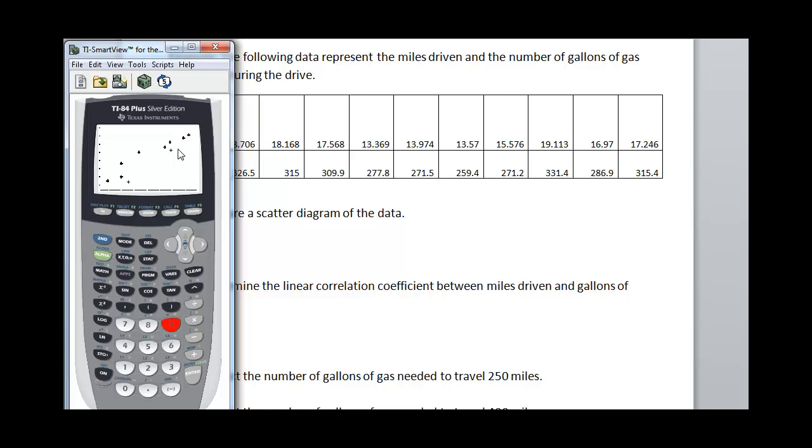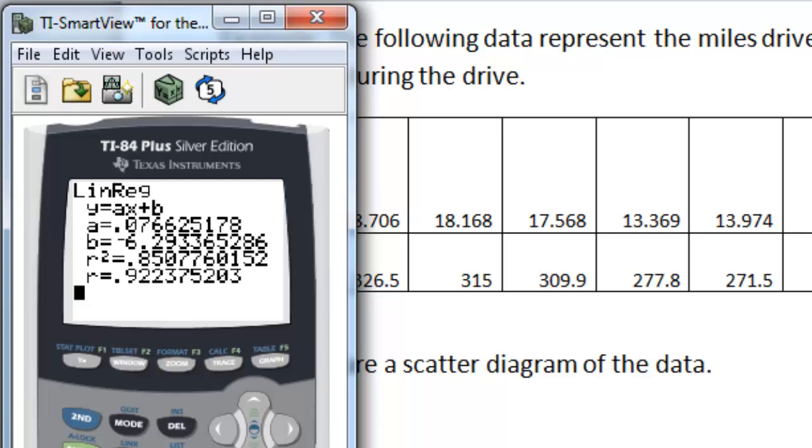So that allows me to go on to the next step, which is to find the correlation coefficient. To do that, we went to stat, calc. We're going to do number four, which is linear regression. I need to tell it where my x values are first. So I put my x values, miles, in L4, and my y values are in L3. So the correlation coefficient is 0.92. So we can say there's a strong linear relationship between miles driven and gallons of gas used.